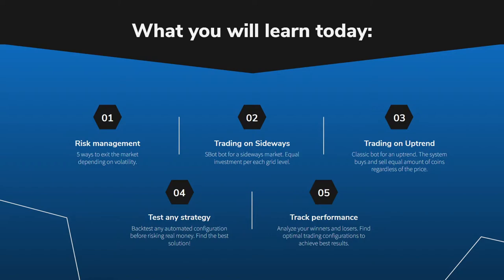We are also working on various tools to let you control risk better and have fully controlled risk exposure on the market, fully automated. Today we will talk specifically about risk management — what are the five major ways at BitsGap to let you exit the market depending on the volatility scenario, and I will guide you through all of the tools we have for both manual and automated trading.